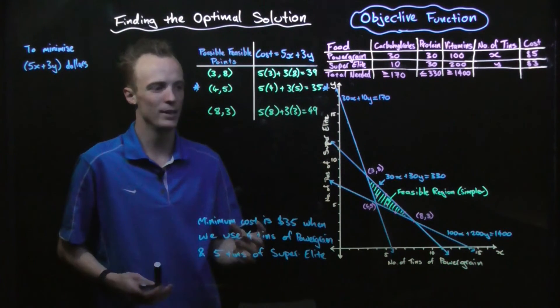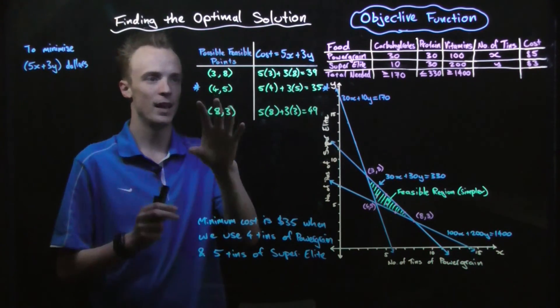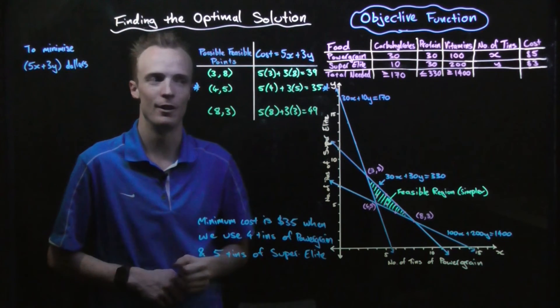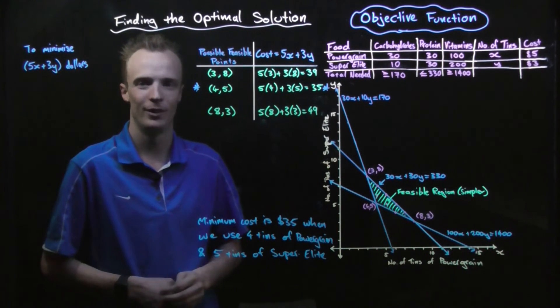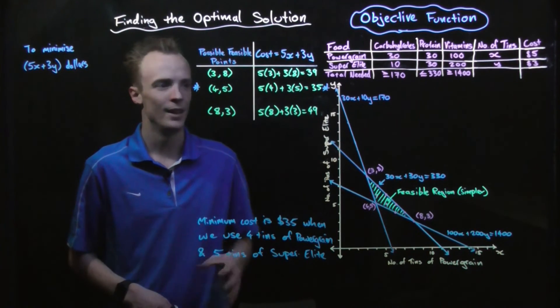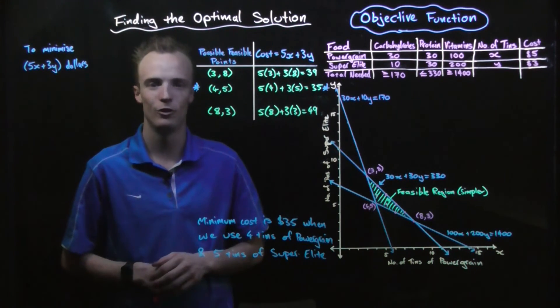I could have simply taken the 3 vertices of the problem and substituted them into my objective function and worked out which of them had my minimum cost. So as you can see, this would have been a much faster way to find our minimum cost solution.